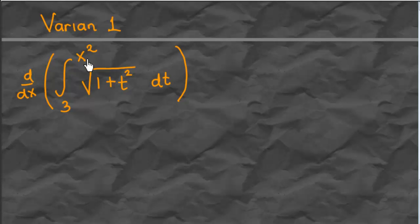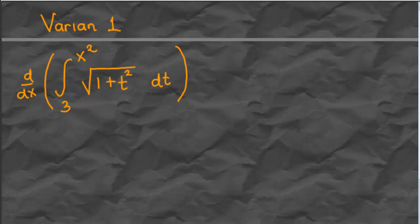Another variant: what happens if the upper limit is not simply x, but something like x², as in this next problem? Can we just substitute x² for t? In this case we can't directly, because the theorem requires the integral from a fixed number to x exactly. To deal with this, we let u equal x².